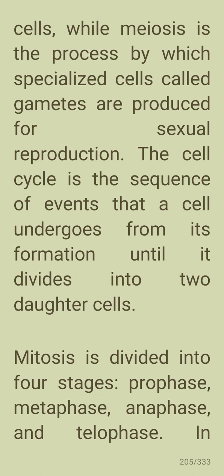Mitosis is divided into four stages: prophase, metaphase, anaphase, and telophase. Meiosis is a process by which specialized cells called gametes are produced for sexual reproduction. The cell cycle is the sequence of events that a cell undergoes from its formation until it divides into two daughter cells.